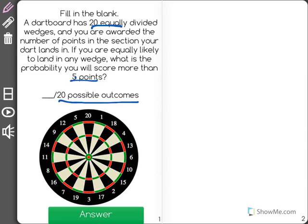Now, if we're equally likely to hit any section in this dartboard, it wants to know what is the probability of us getting more than 5 points. So all that we have to do is find out how many of these wedges are greater than 5.